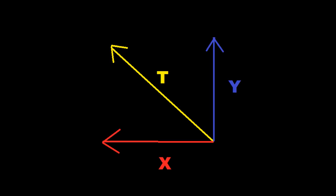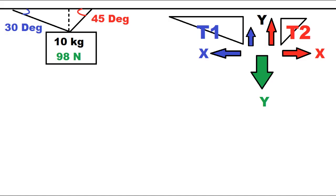To solve for tension, we're going to break each of the tensions into x and y components, and then we're going to see how they all cancel out. The tension on the rope going at 30 degrees is broken down into x and y and it's shown in blue. The tension of the 45-degree rope is broken down and shown in red. Then we have a green arrow for the weight of the object.